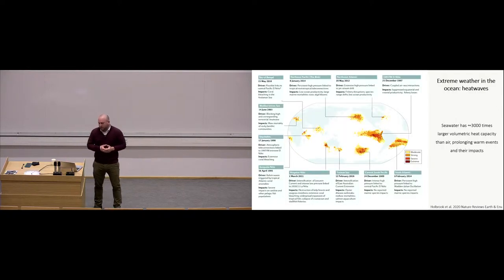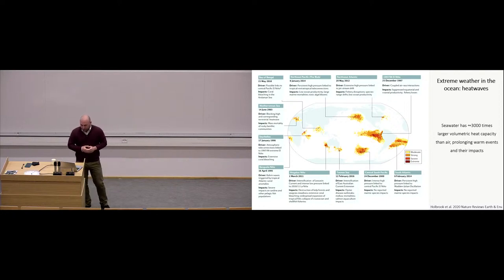So another type of extreme event in the ocean, as I've hinted to before, are heat waves. Sea water has almost 3,000 times larger volumetric heat capacity than air. So while it takes longer for the ocean to heat up, it also takes longer for it to cool. So it could prolong ocean warm events. The map that you see are of some recent heat waves over the past 20 years, particularly notable ones, that have been linked to specific ecological disturbances, such as coral bleaching, for instance. We've probably all seen the documentary Chasing Coral on Netflix. To, for instance, fishery disruptions, suppressed coastal productivity, and so forth.